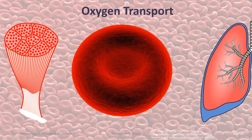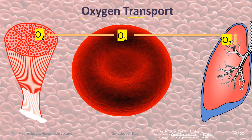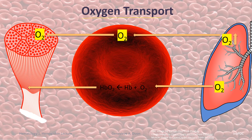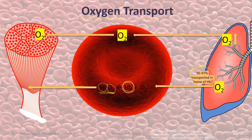Now that we know how carbon dioxide is transported, let's look at oxygen transport. Generally, oxygen from the lungs is carried by the red blood cell to the different parts of the body. Oxygen from the lungs binds with the hemoglobin inside the red blood cell, and this binding produces oxyhemoglobin — hemoglobin that is bound to oxygen — which is then transported to the different parts of the body. This type of oxygen makes up 95% to 97% being transported in the heme portion of hemoglobin, leaving only around 3% to 5% of the oxygen diffusing in the plasma and transported in solution.